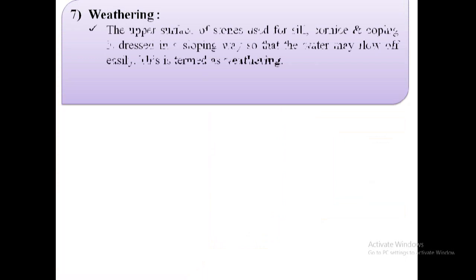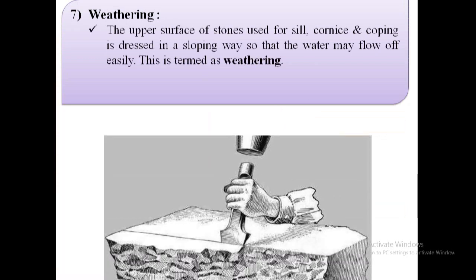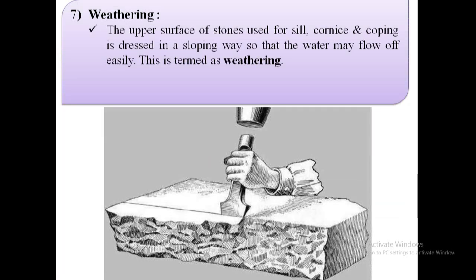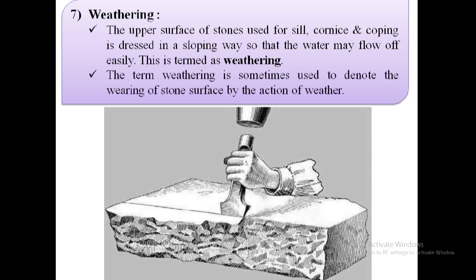The next term is weathering. The upper surface of stones used for sill, cornice, and coping is dressed in a sloping way so that water may flow off easily. This is termed as weathering, meaning the dressing of stones in a sloping way. The term weathering is sometimes also used to denote the wearing of a stone surface by the action of weather.